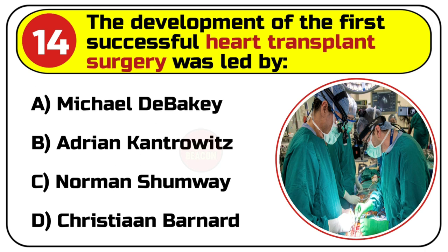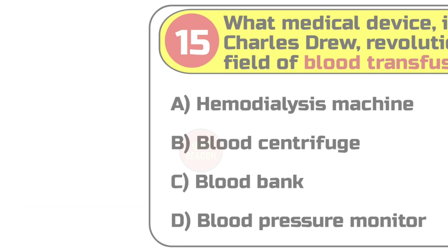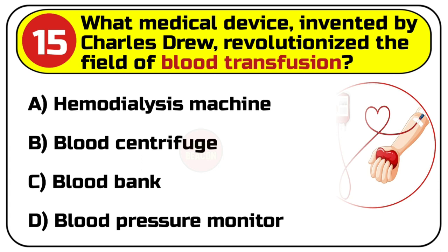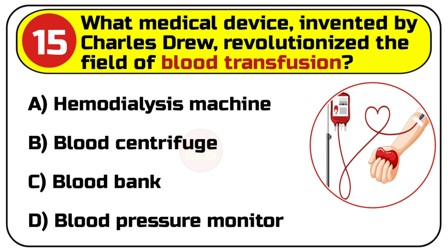Correct answer is D. Christiaan Barnard. Question number 15. What medical device invented by Charles Drew revolutionized the field of blood transfusion? Options are: A. Hemodialysis machine, B. Blood centrifuge, C. Blood bank, D. Blood pressure monitor.